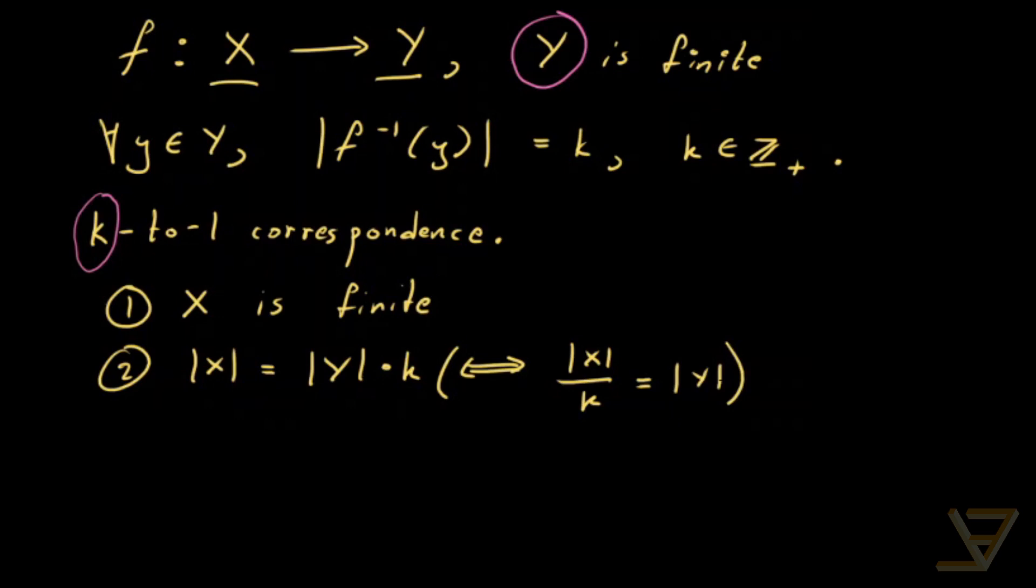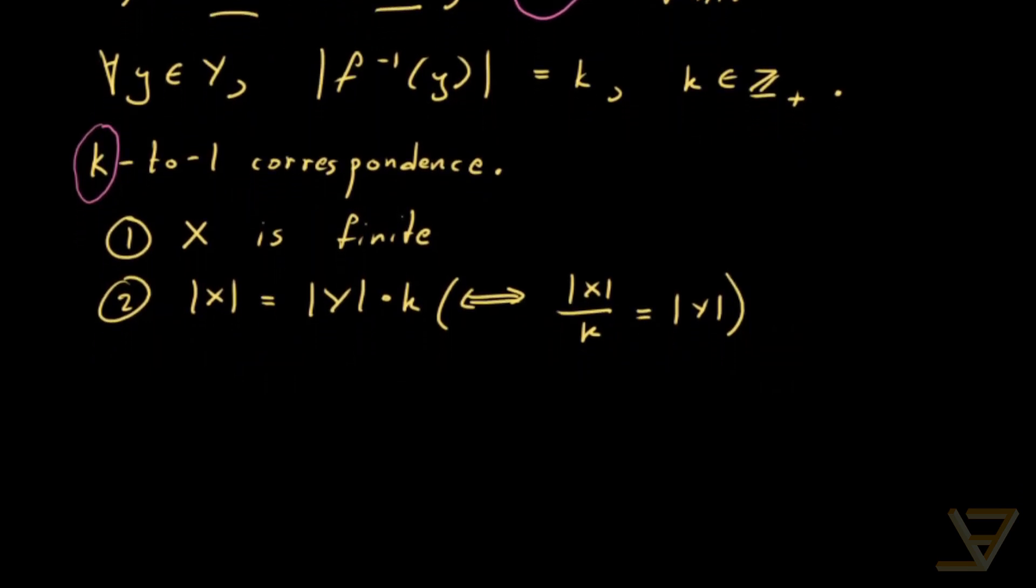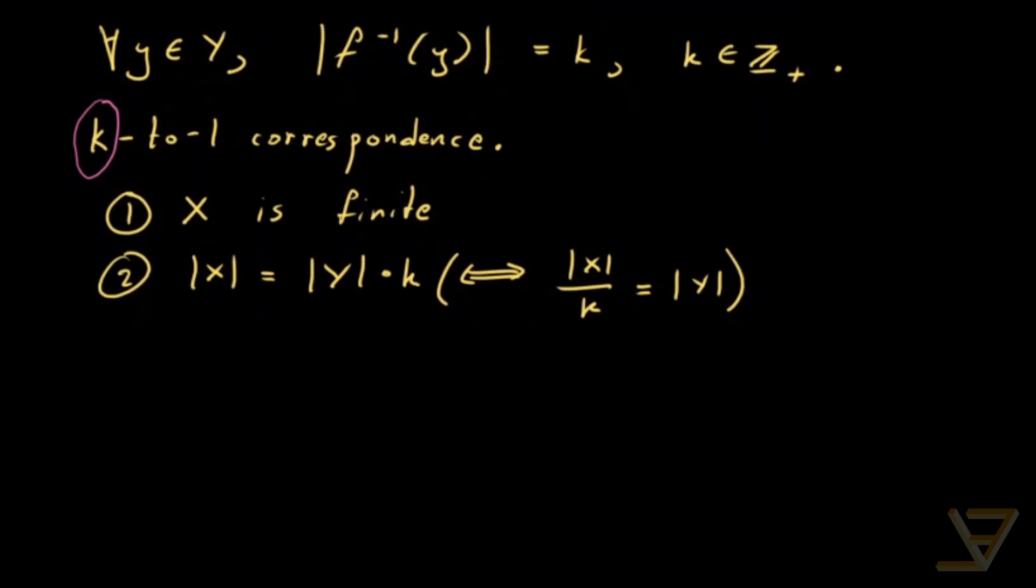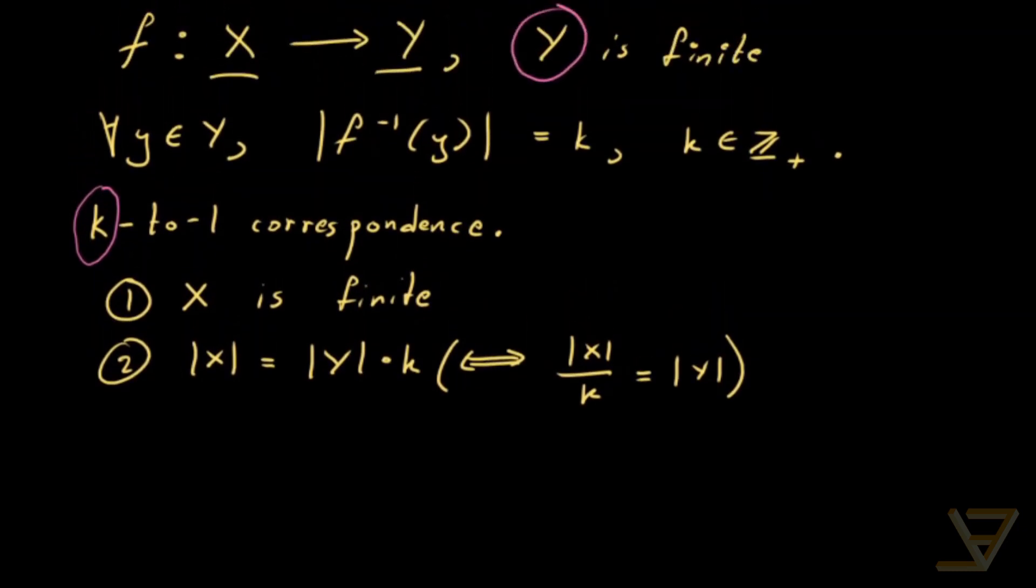So depending on which one you're trying to figure out, you can write it that way. We can actually also go the other way. We can assume that X is finite, in which case it'll prove that Y is finite.